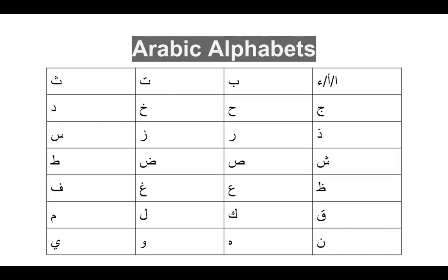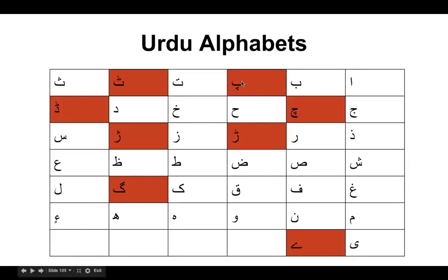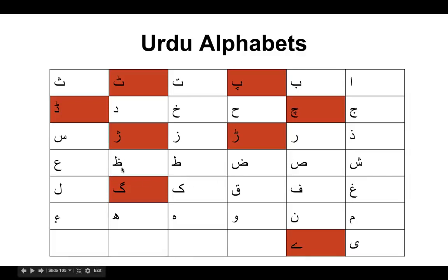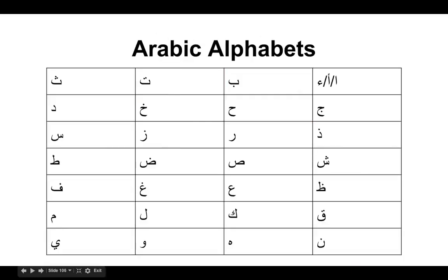There is another very similar script used in India, Pakistan, and the Urdu language. In Urdu there are approximately 38 to 39 letters — certain letters have been added to the Urdu script which you don't find in Arabic, like Tay, Dal, Da, Ja, Ga, Ye. These letters are not pronounced in Arabic. Also, certain pronunciations differ — for example, what in Urdu is called Zwaad is called Daud in Arabic, so we have to practice those differences.